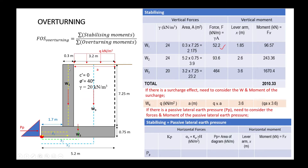The lever arm x1 is the horizontal distance from the center point of W1 to the point of overturning. We take 0.3 divided by 2 and then add the remaining horizontal distance, giving 1.85 m. You can then calculate the moment by multiplying the force by the lever arm. Complete this for all weight components — for example W2 — then proceed similarly for each section.